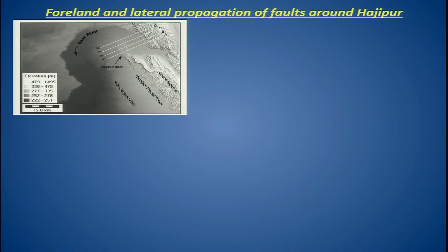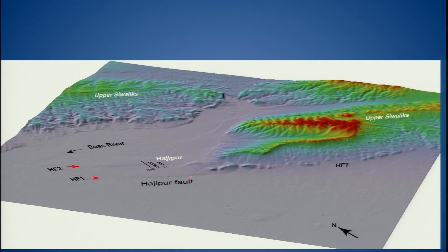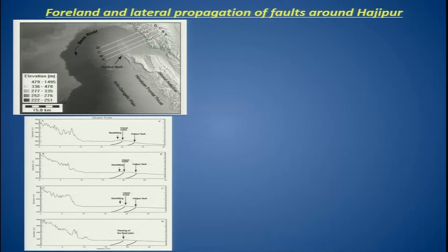We also looked at the topography — what we see is a higher scarp here, and further if you move along the strike towards the direction of propagation, the height reduces. This is because this portion of the scarp is showing cumulative displacement, whereas this one is taking up the younger displacement. The height is clearly picked up from topographic profiles extracted from a digital elevation model. Looking at profiles AA', BB', CC', and DD', the topography closer to the hills has higher elevation and as you move further along the strike, the topography reduces.